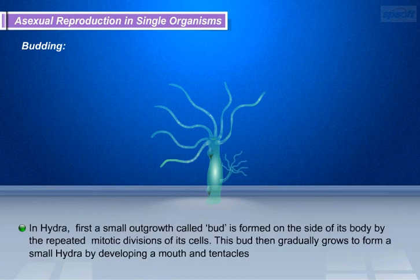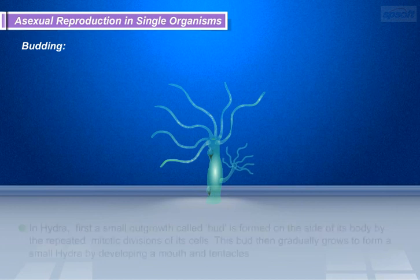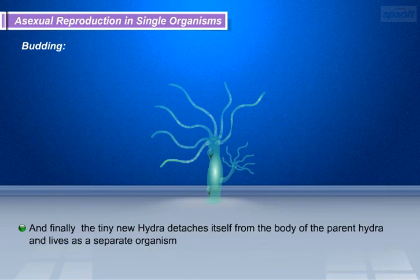In Hydra, first a small outgrowth called a bud is formed on the side of its body by the repeated mitotic divisions of its cells. This bud then gradually grows to form a small Hydra by developing a mouth and tentacles. Finally, the tiny new Hydra detaches itself from the body of the parent Hydra and lives as a separate organism.